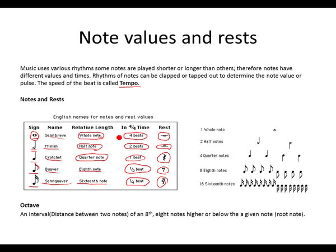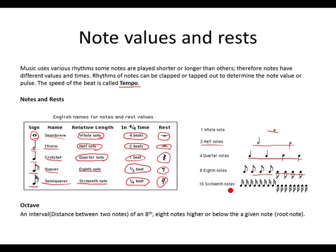A semibreve has 4 beats. A minim is half of a semibreve. A crotchet is half of a minim. A quaver is half of a crotchet. A semiquaver is half of a quaver. Subdivisions: 1 whole note (semibreve) equals 2 half notes (2 minims), equals 4 quarter notes (4 crotchets), equals 8 eighth notes (8 quavers), equals 16 sixteenth notes (16 semiquavers) — all making up 1 whole note.